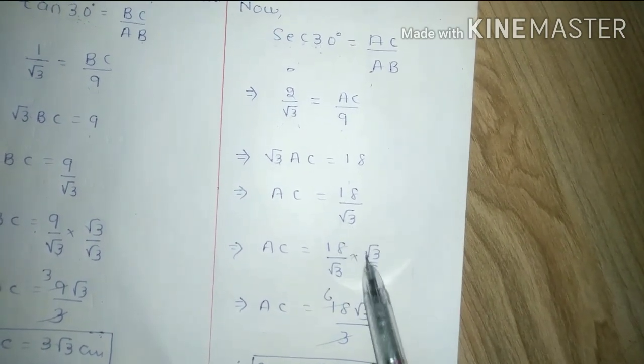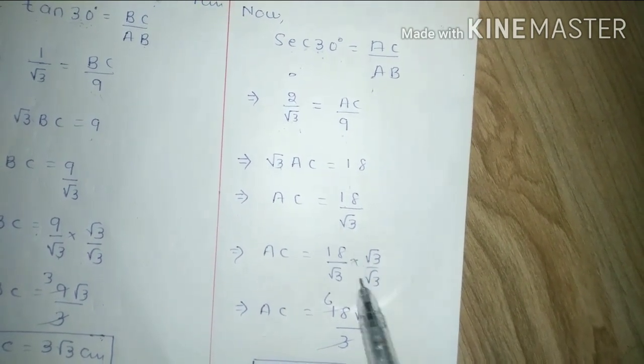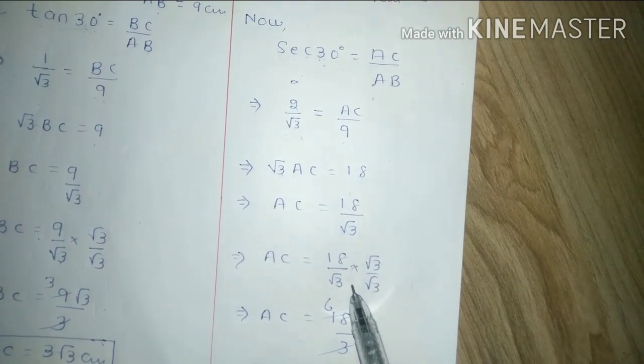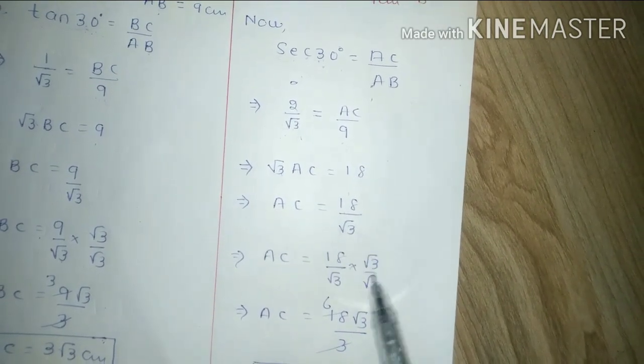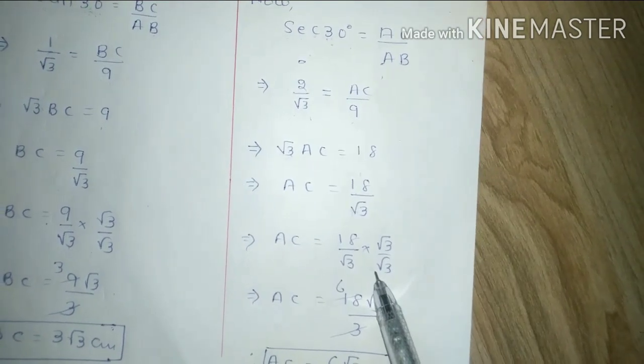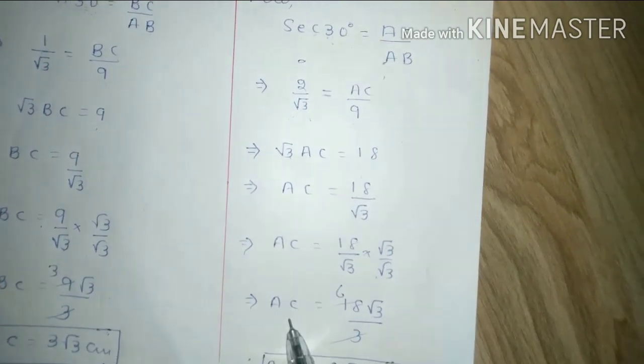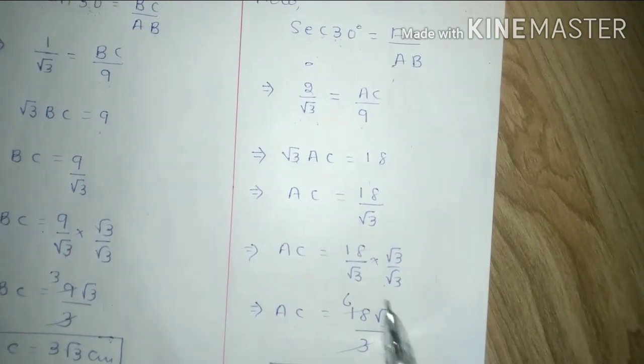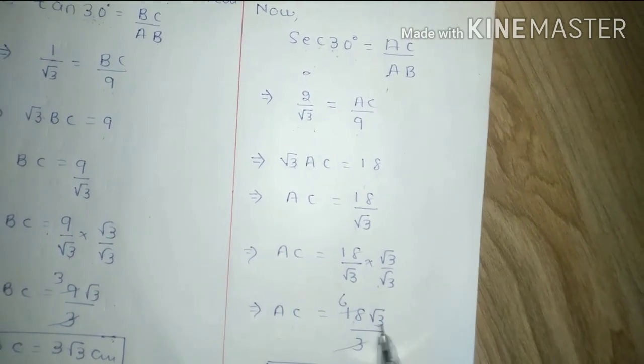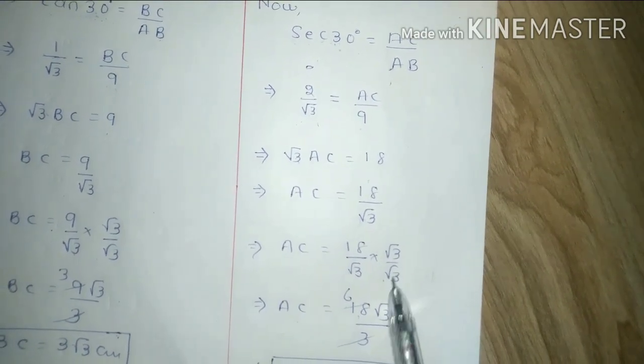Now rationalization again, same thing we will do. What will we do, numerator denominator we will multiply by under root 3. Above and below both numerator denominator I have multiplied. Now AC is equal to what will come, multiply 18 under root 3.